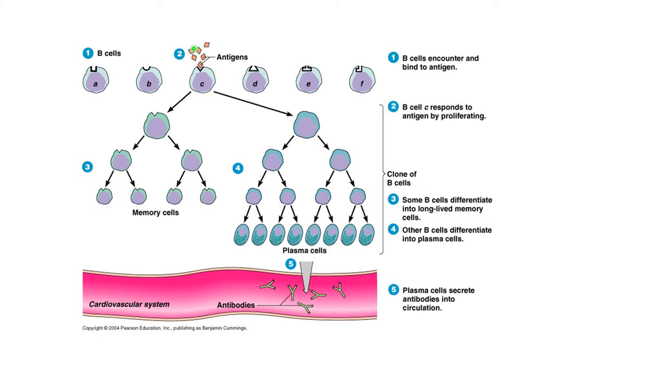That antigen selecting the B cell by binding to its B cell receptor will stimulate this B cell to divide by mitosis to produce clones. What we end up with is a bunch of B cells that are identical to the one that was selected.